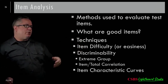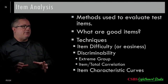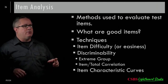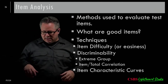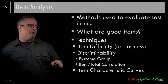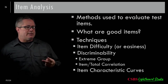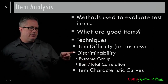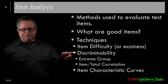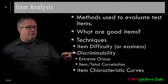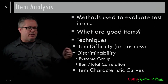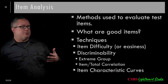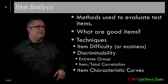When thinking about what makes a good item, there are two parts, and up until now we've been ignoring one of them. We've only been looking at discriminability — how much the item relates to the thing you're trying to measure. That's related to factor loadings: a loading tells you how much the item relates to the factor, and that's the item's discriminability.